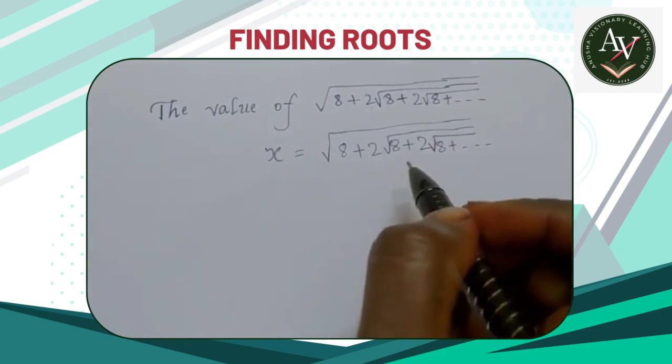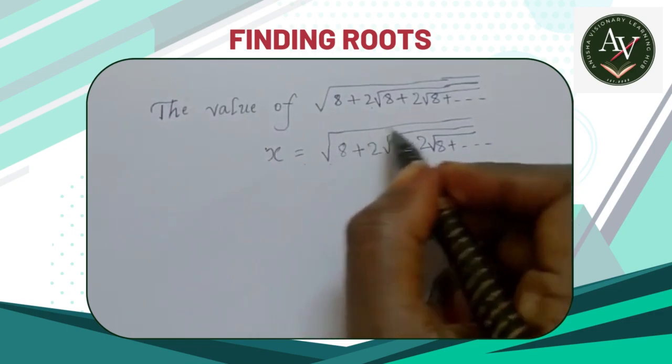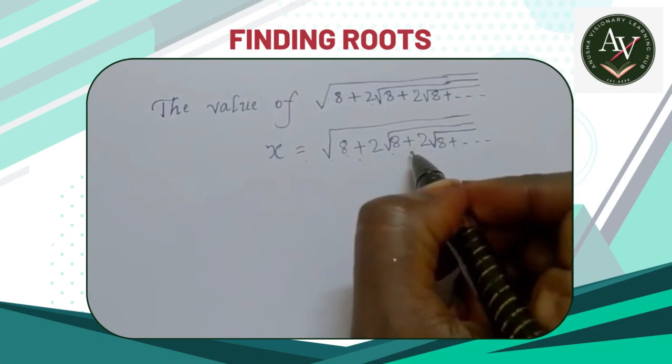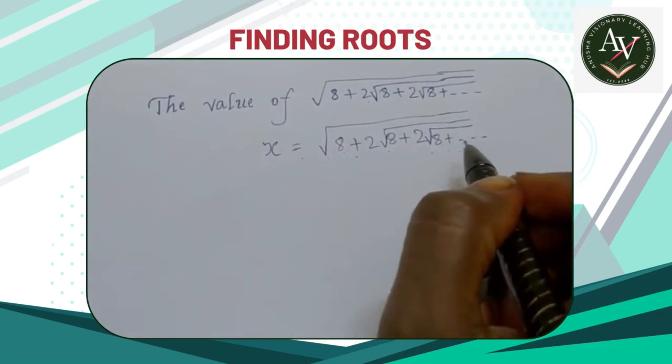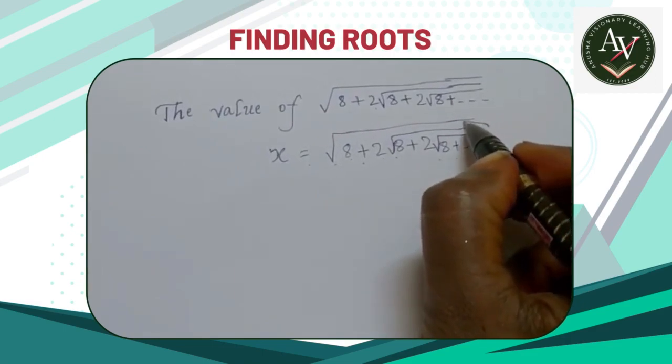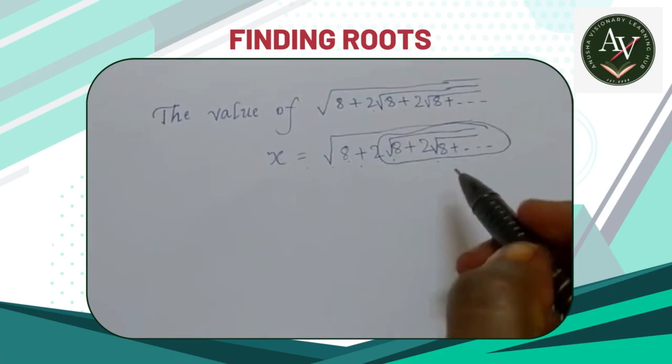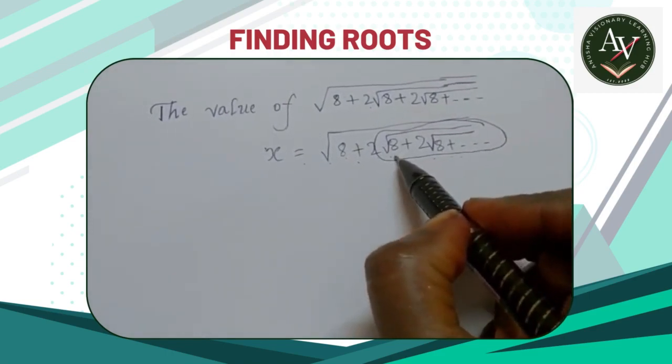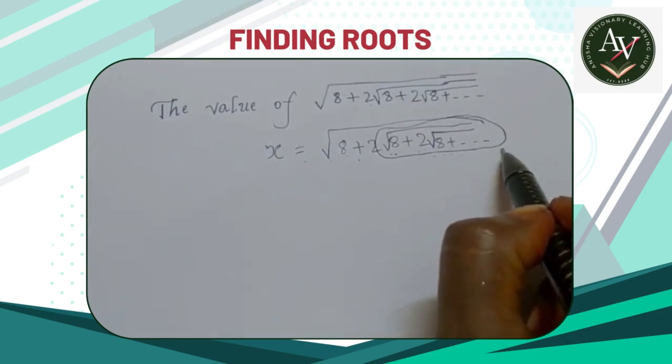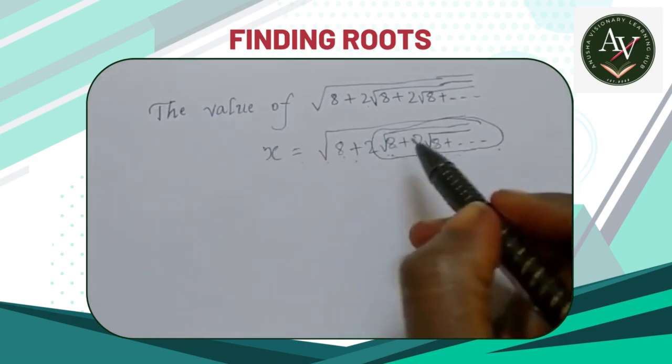Here you can observe that x = √(8 + 2√(8 + 2√(8 + ...))). If you look here, just observe this. This is a form of √(8 + 2√(8 + ...)), so we can replace it with x.